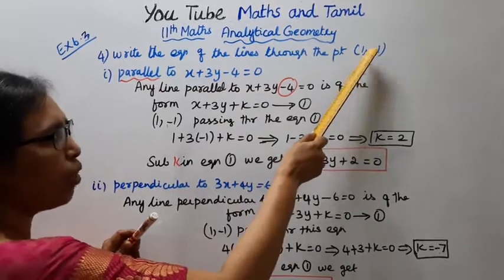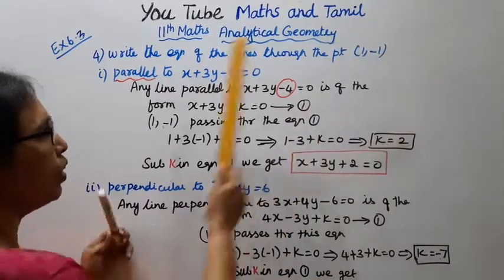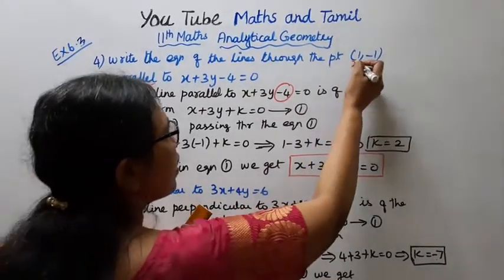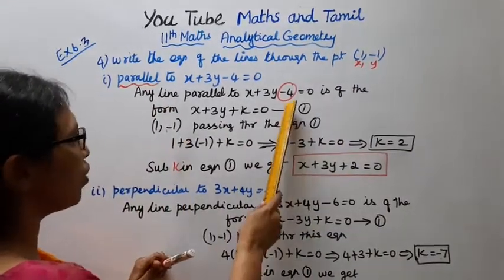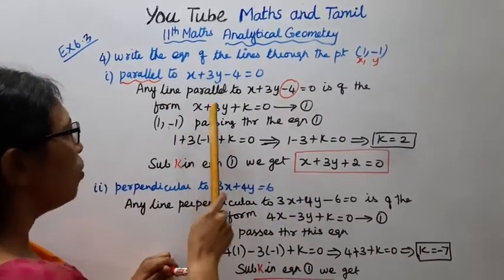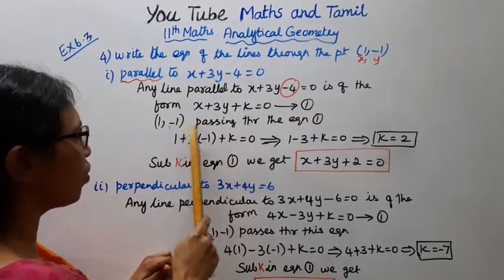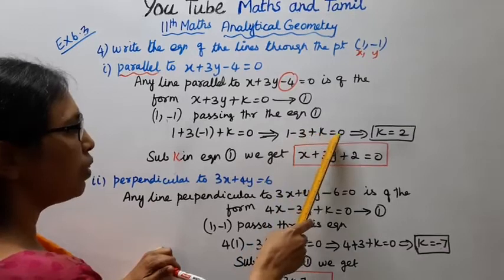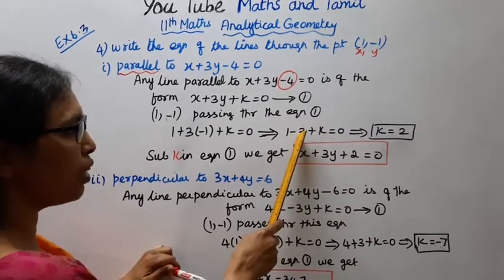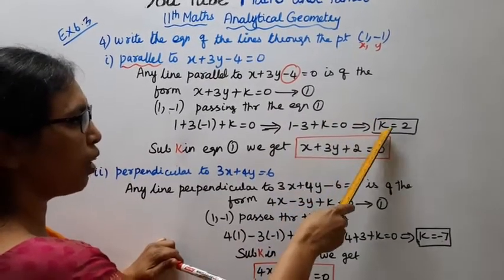If we look at the point (1, -1), this is x, this is y: 1, -1 passing through equation 1. Then x is 1 plus 3 into y, which is -1, plus k = 0. Then 1 + 3(-1) + k = 0, so 1 - 3 + k = 0. That gives us k = 2.